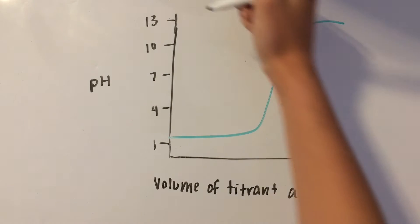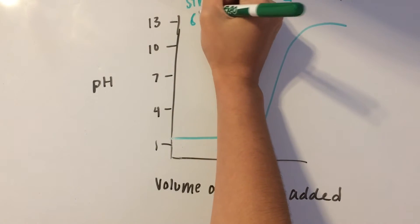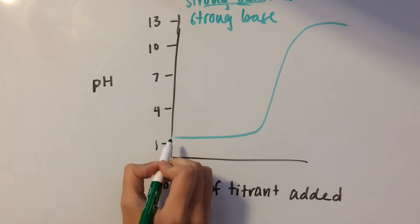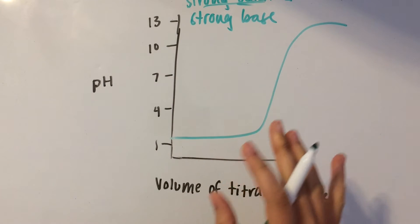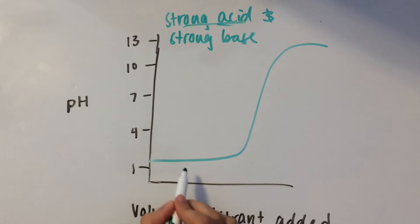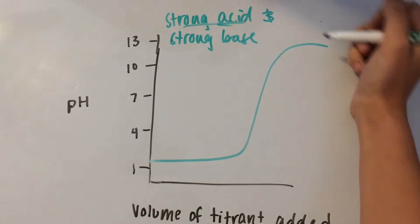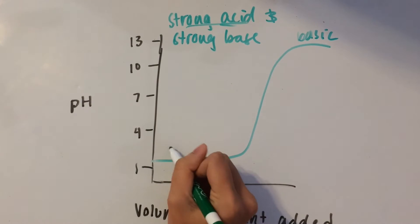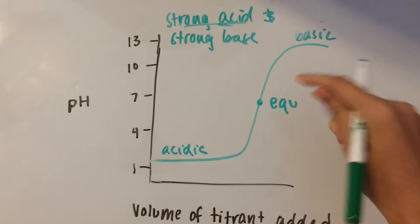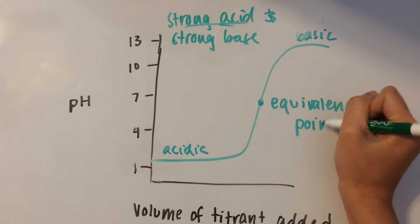This is a curve of a strong acid being titrated with a strong base. You can tell it's starting out with a strong acid because the pH is very low — and remember that the lower the pH is, the stronger the acid is. Here we add more and more titrant, or more and more of the strong base, and then you see a big jump up to a very high pH. Over here it's extremely basic, and here it's very acidic. This point here is what we call the equivalence point — it's pretty much halfway up this huge jump.